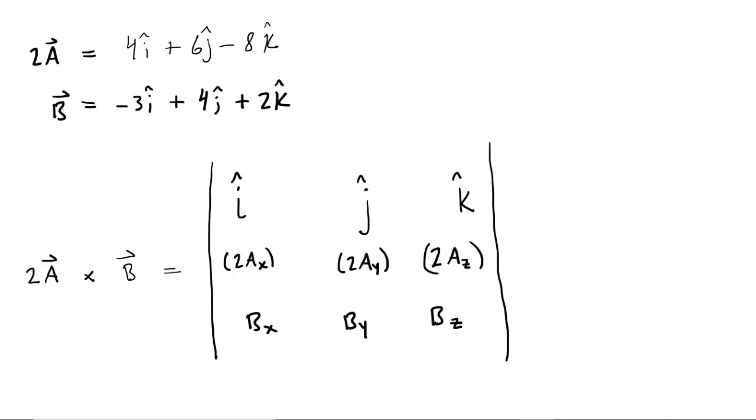For reference, we have rewritten the quantity 2 times vector A and the original vector B up here at the top of the screen. Beneath that, we have written a sort of template for computing a cross product. Don't be intimidated. When you do a cross product, what you're going to do is take your first vector, which is 2 times vector A, and you're simply going to fill in the x, y, and z components of that particular vector. If we look up at the vector 2A, we have the x, y, and z components listed right here. So for example, in this position right here for the x component, we're just going to fill in the number 4.